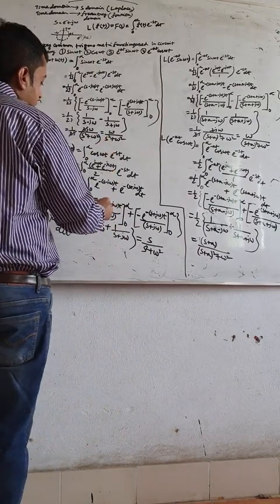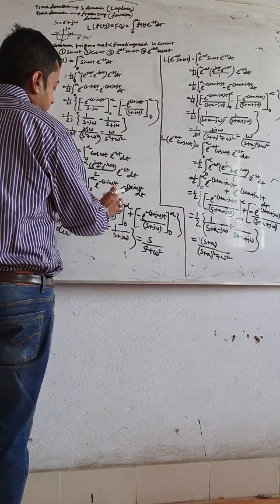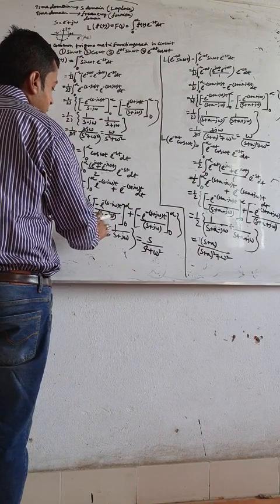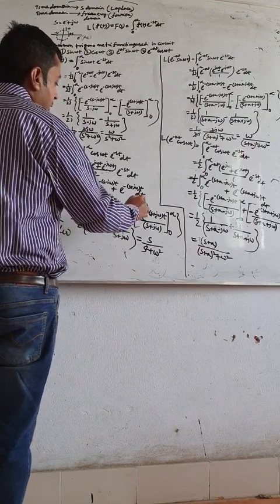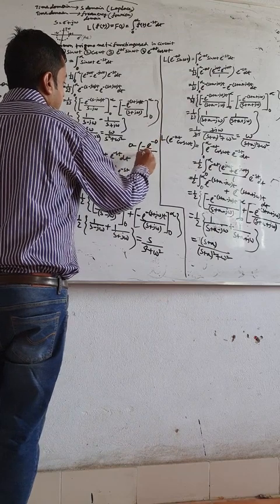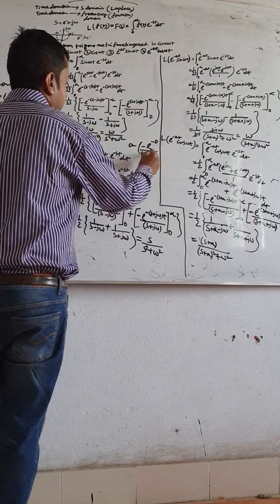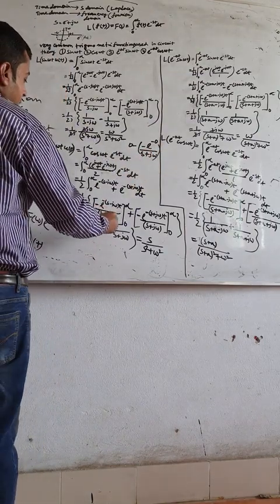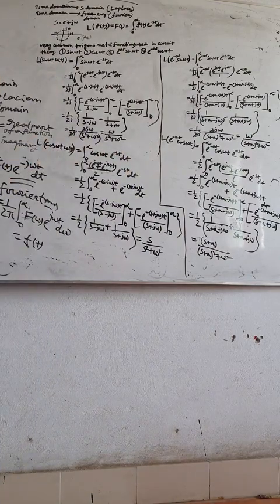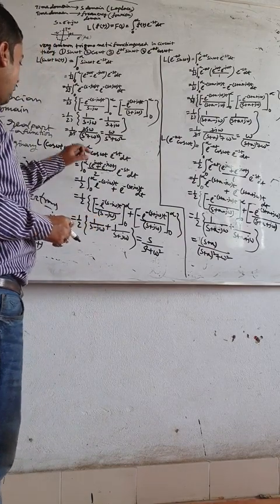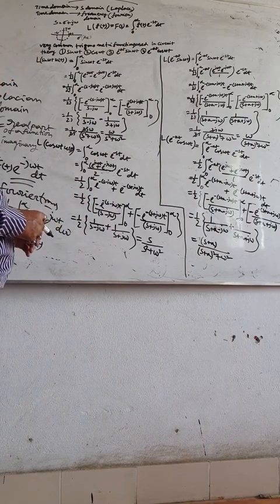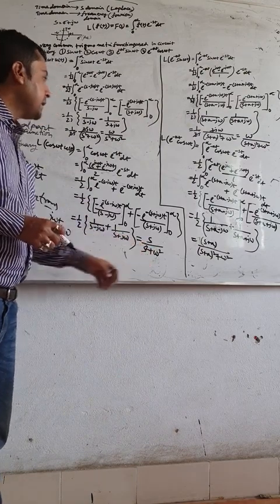Since e to the power minus infinity is 0, the upper limit vanishes. For the lower limit: 0 minus (minus 1) divided by (s minus j omega) — the minus minus becomes plus — giving 1 by (s minus j omega). Similarly, 1 by (s plus j omega). With the factor of one-half, performing the calculation: the final result is s divided by s squared plus omega squared.